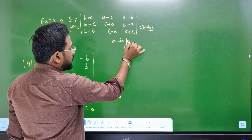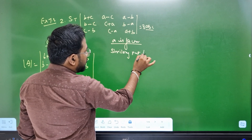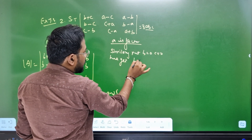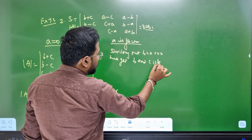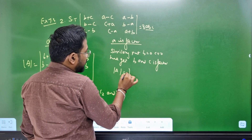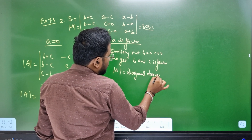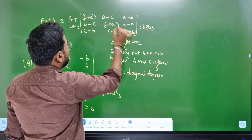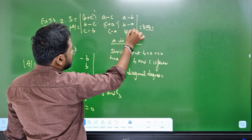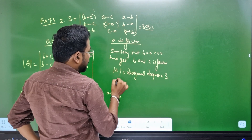That's why A becomes a factor. A is a factor. Similarly, B and C — we get a factor. Put B equal to 0, C equal to 0, we get B and C as a factor. Now, degree check. The determinant is a diagonal degree. This is a diagonal — this is degree 1, 2, 3. So 1 plus 1 plus 1, degree is 1 plus 2 plus 3. That's the factor degree.